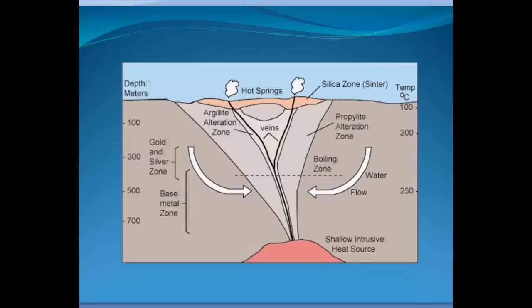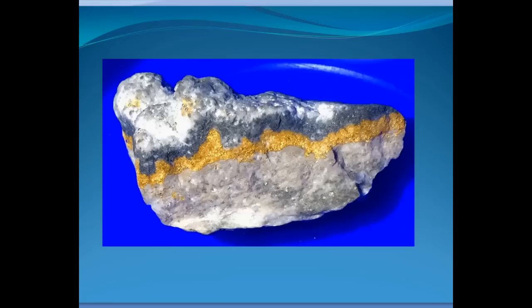There's usually what they call a silica center zone at the surface — that's what the deposits of the geysers and hot springs actually create. But most of the time the hot springs don't have any gold and silver to speak of in them. The gold and silver is further down in the system. But they can be super rich — here's a beautiful specimen of gold ore from Goldfield, Nevada, full of gold.